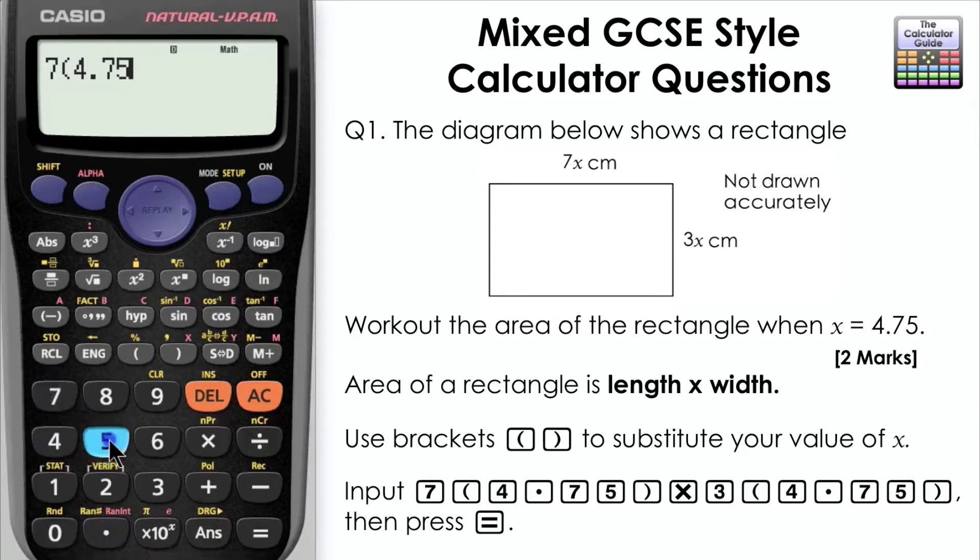Our length is 7X so it's 7 lots of 4.75 multiplied by 3 lots of 4.75. Ensure that you have the brackets around the 4.75 when you're inputting it into the calculator.